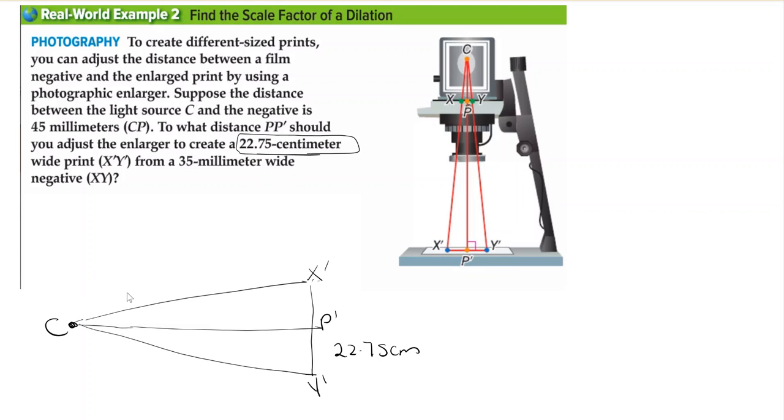The distance CP is 45 millimeters. So here this is going to be P. This distance here is 45 millimeters.